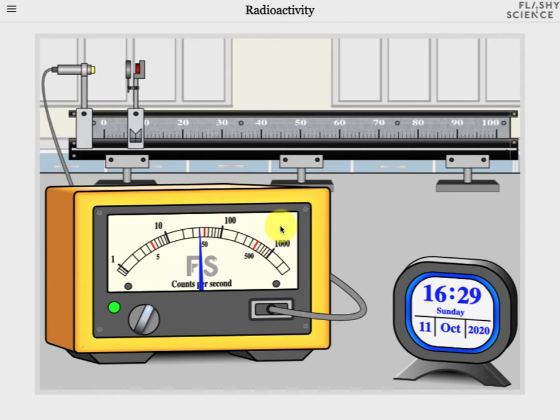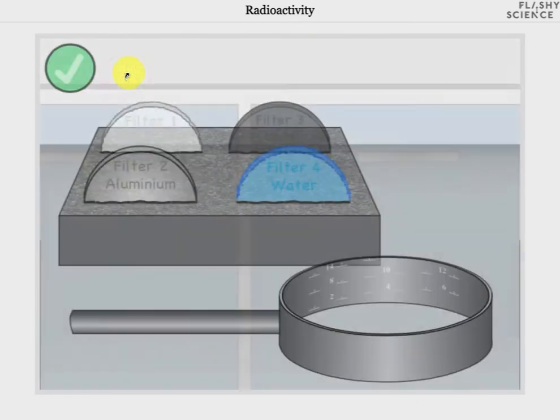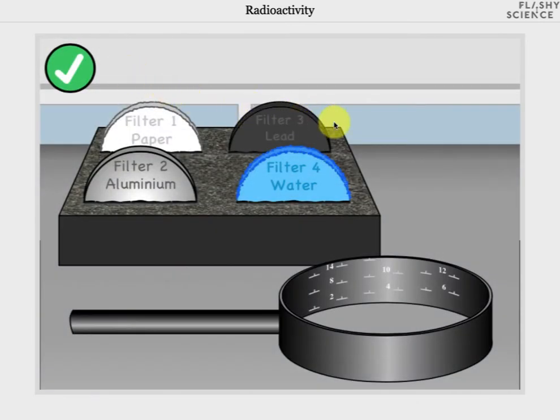We can explore the effect of different filter materials by clicking on this region of the mount assembly that holds the filters. This moves us to a new screen that shows us four different filter materials: paper, aluminium, lead and water.